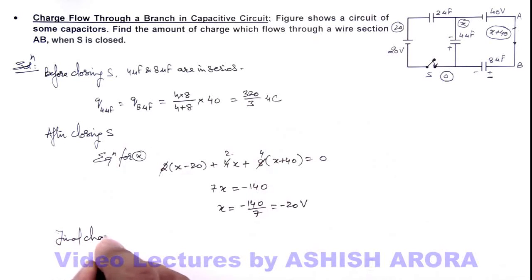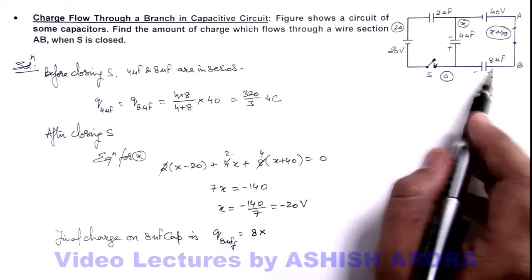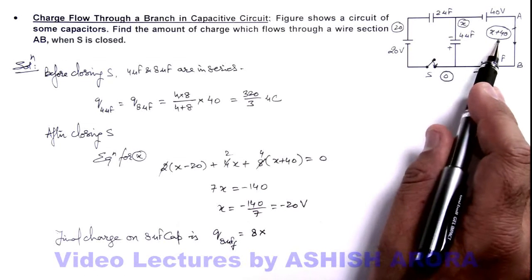Final charge on the 8-microfarad capacitor, Q_8μF final, can be written as CV. Its charge can be given as 8, which is the capacitance, multiplied by the potential difference across the two plates. Here, the potential is x plus 40.